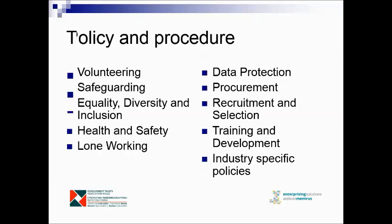Then we look at policy and procedure. We need internal policy within our organisations that matches the laws that govern us, allowing us to implement what the law says at the local and organisational level, with procedures to go with each policy. We need policies on volunteering, safeguarding, EDI — equality, diversity and inclusion — health and safety, and lone working. Many of you will have people working on their own in isolation at various times. Also policy on data protection and procurement — how we buy things — as many organisations have strong ethical principles and choose not to buy from sources they consider harmful to society.